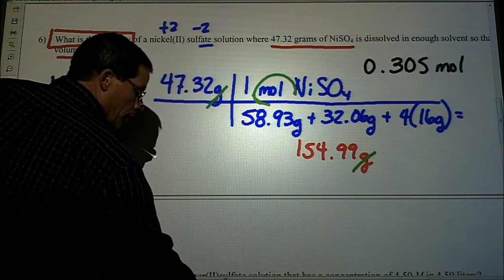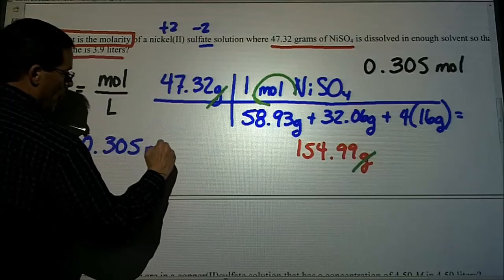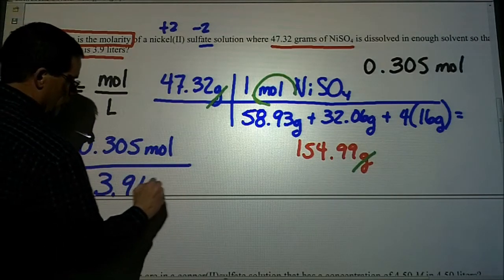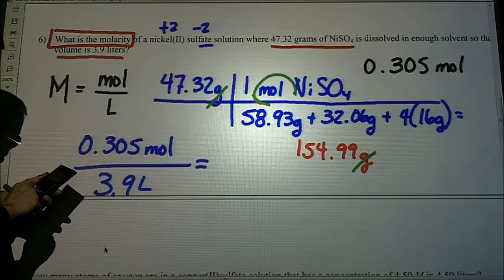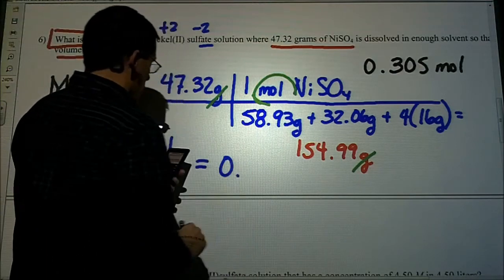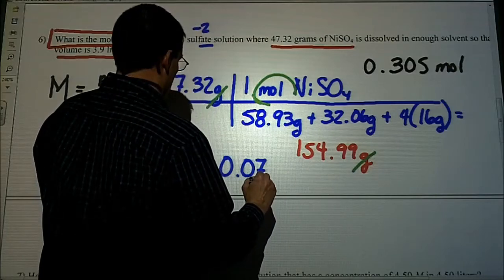I'm going to plug that in over my total volume, which is 3.9. So I have my 0.305 moles over my 3.9. I'll divide that by 3.9, and that gives me a molarity of 0.078.